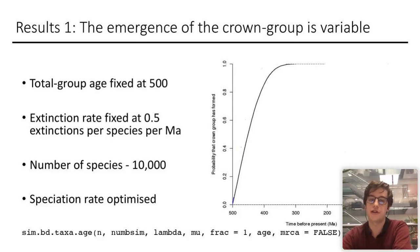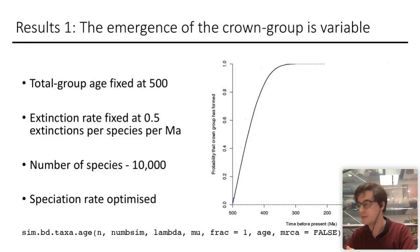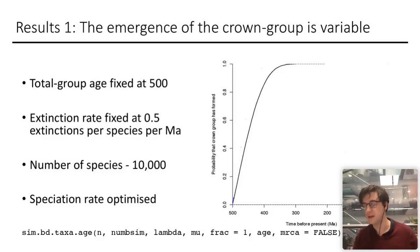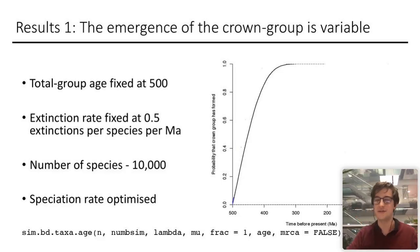The plot shows the cumulative probability that the crown group has formed at time points between 500 and 0, with 500 being the start of the simulation. There is considerable variation, with 95% of crown groups forming between 357 and 497 million years old.